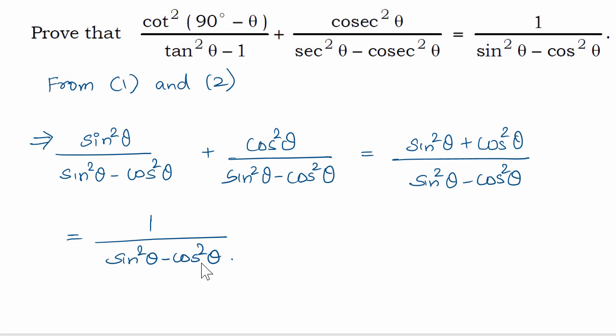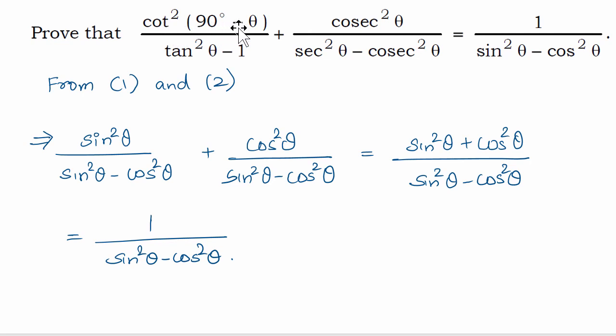This problem requires a lot of identities. You need to remember: cot theta, tan theta, secant theta, cosecant theta — you should be able to express each in terms of sin and cos. You also need to know sin and cos of 90 minus theta, and the identity sin square theta plus cos square theta equals 1.